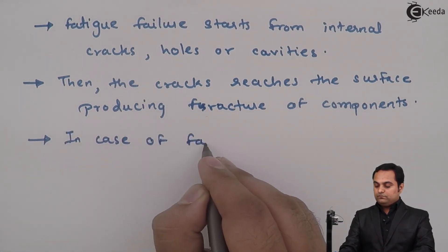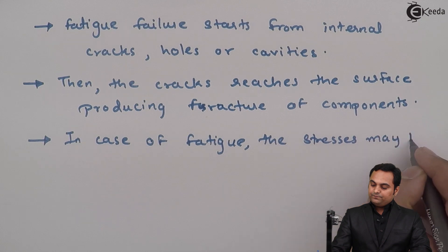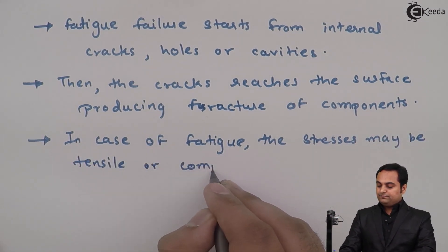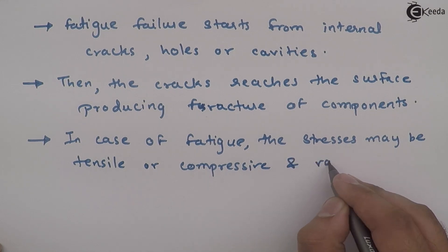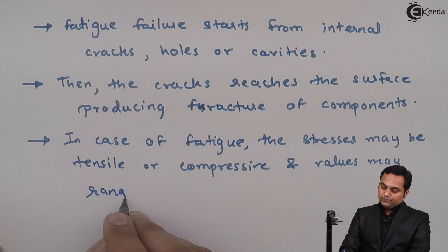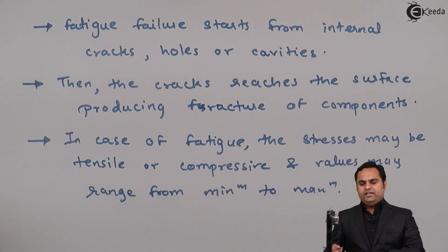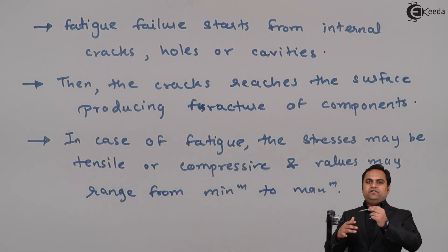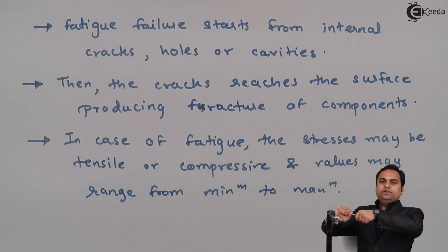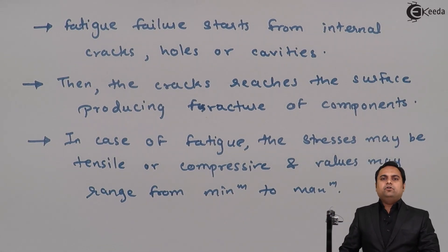In case of fatigue, the stresses may be tensile or compressive, and values may range from minimum to maximum. For fatigue to take place, stresses can change from tensile to compressive or minimum to maximum values. For example, if we have a rod and we twist it and then untwist it continuously, because of this repeated action the material will break — and such failure is called fatigue failure.